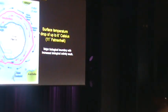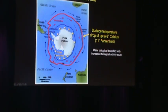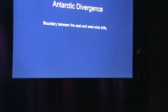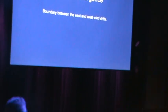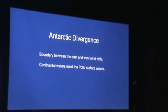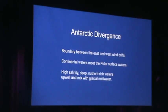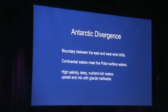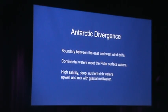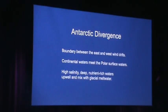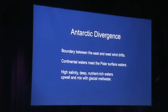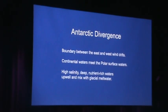Everything south of this boundary going toward the continent is the most biologically active and productive area. So let's think about the Antarctic divergence — the third boundary we've talked about. It's a boundary between the east and west drifts. The continental waters of Antarctica meet the polar surface waters. It's very high salinity, generally quite deep, and very nutrient rich, with nutrient-rich waters coming down from the Arctic Ocean along the North and South American coast and upwelling in the Antarctic.